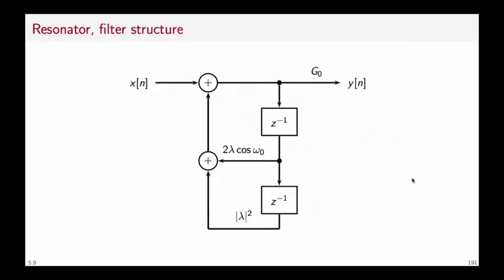As for the filter structure this time we have two delays. It's a simple feedback loop once again but a second order feedback loop in which the input is first delayed by the first delay and then piped back via the factor 2 lambda cosine of omega zero and then delayed again and piped back via the factor magnitude of lambda square.